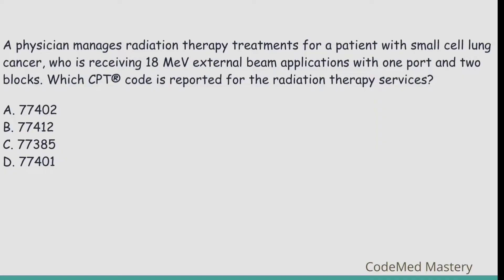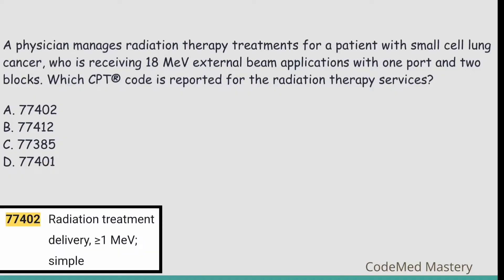Next question: A physician manages radiation therapy treatments for a patient with small cell lung cancer receiving 18 MeV external beam applications with one port and two blocks. Which CPT code is reported? Option A: 77402 — radiation treatment delivery, greater than or equal to 1 MeV, simple. Option B: 77412 — radiation treatment delivery, greater than or equal to 1 MeV, complex.